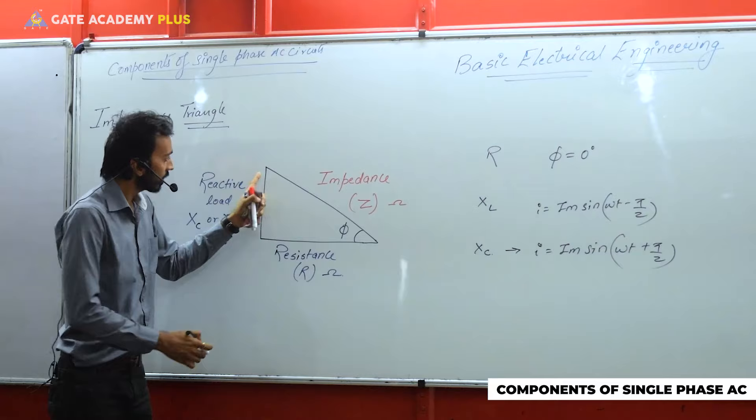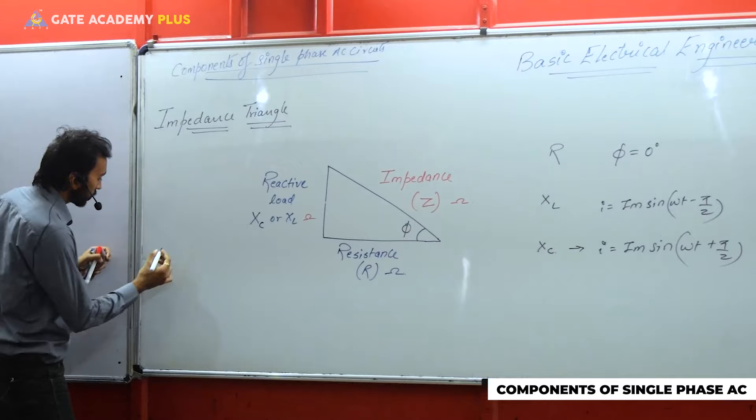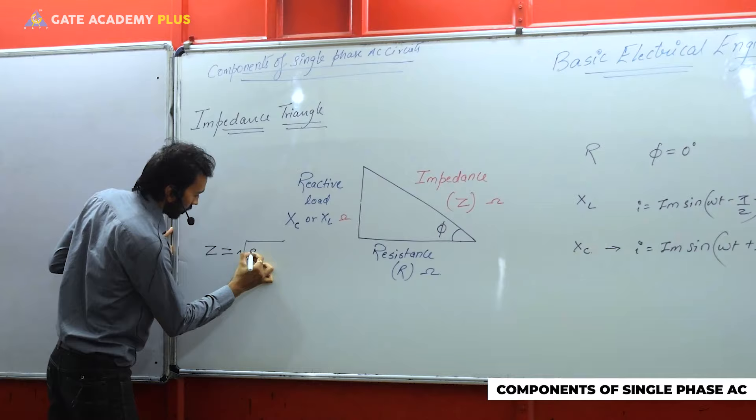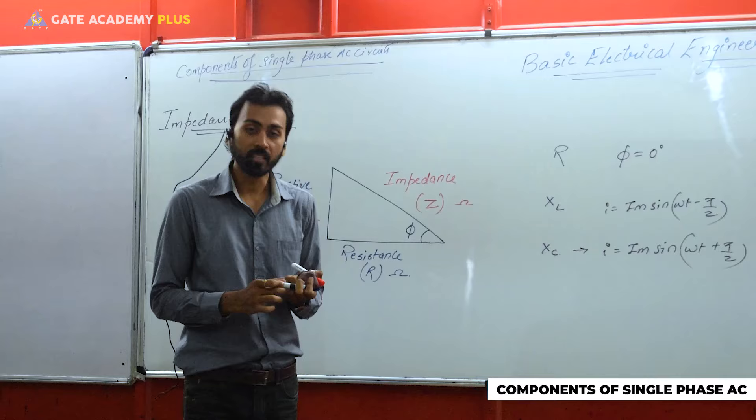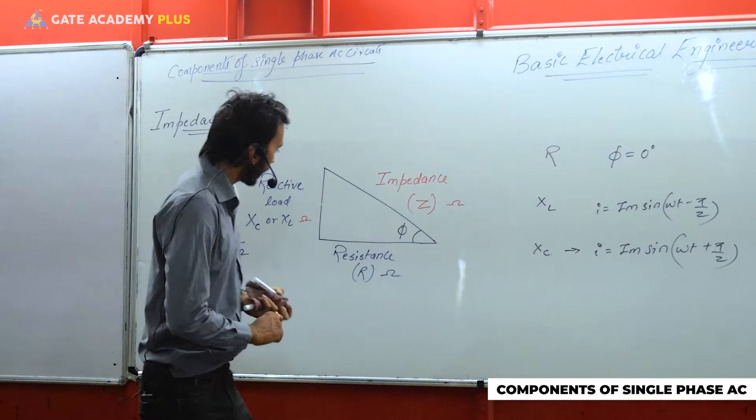That is the reason why for both inductive and capacitive cases we show the reactive section on the perpendicular side. For the purely resistive load, where there is no phase difference between voltage and current, the value of phi is zero — that is why we express the resistive part on the base. When both parts are available, the resultant is impedance Z, and applying Pythagoras' theorem: Z = √(R² + X²), where X contains Xc and Xl if both are available.